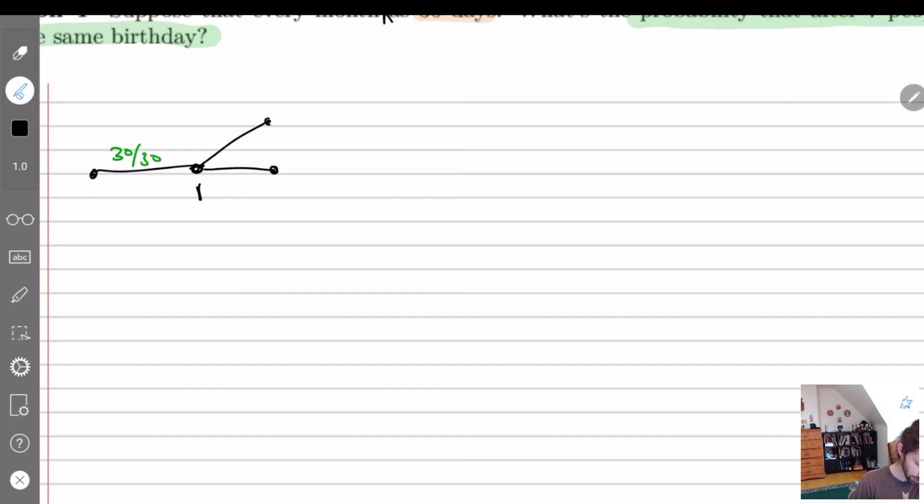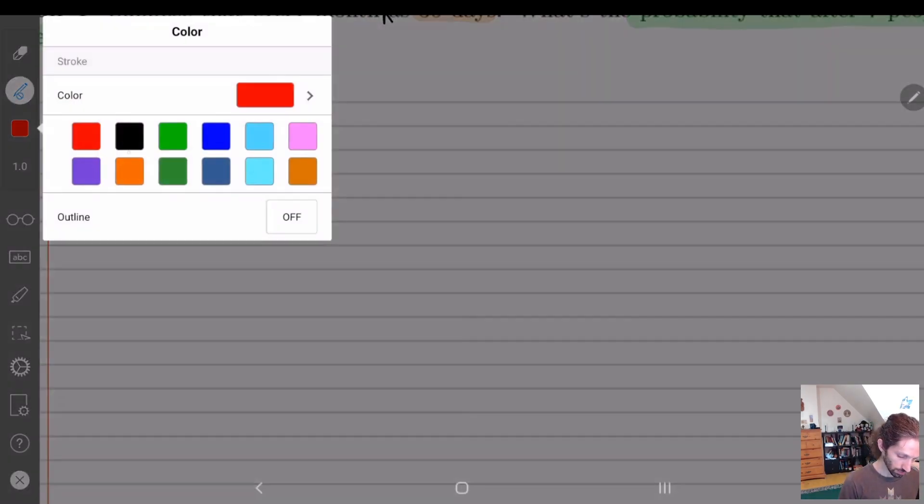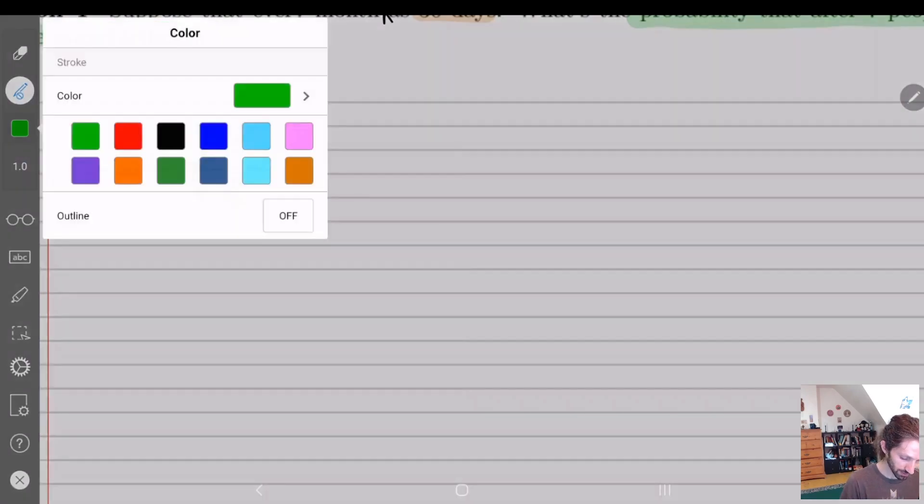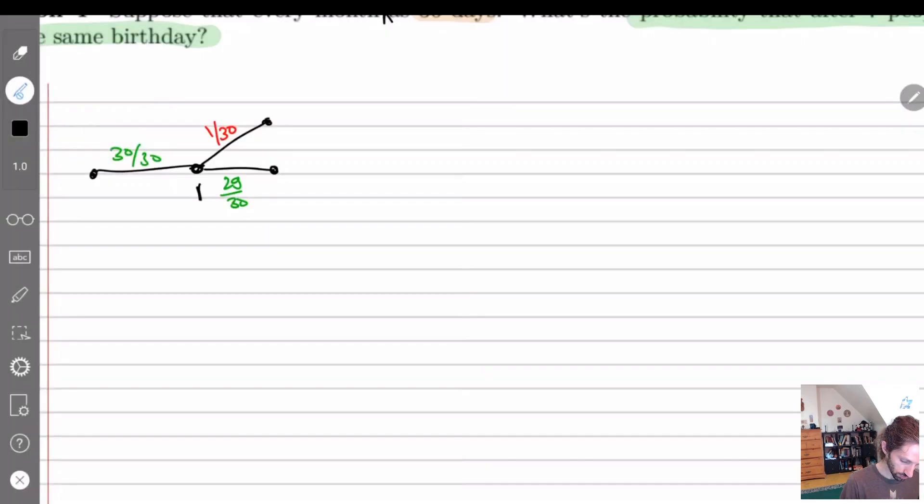Okay so this is person one. What happens with person two? So with person two we have two options right? Either they have the same birthday as person one or they don't. So if they have the same birthday as person one that's a bad thing right? We don't want this because we want it to happen after seven people right? So here we have one out of 30 because there's only been one birthday and the good part is the 29 out of 30.